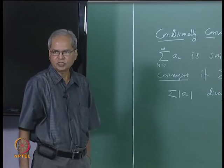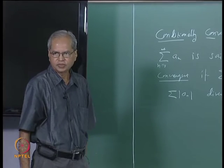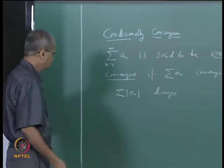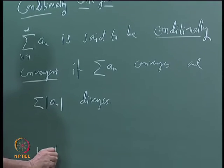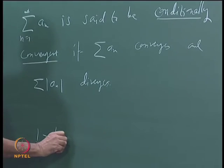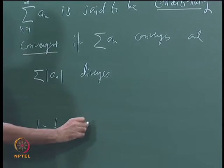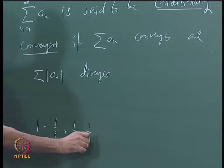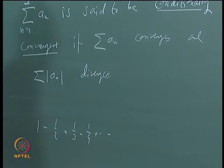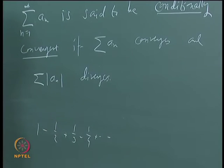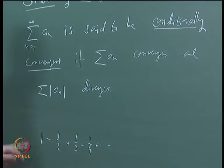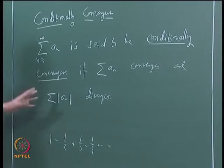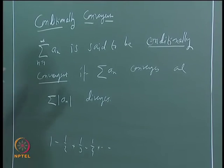We have seen an example of a series of this kind. For example, we saw the series 1 minus 1/2 plus 1/3 minus 1/4, and so on. We have seen that this series converges but is not absolutely convergent. So this is an example of a conditionally convergent series.